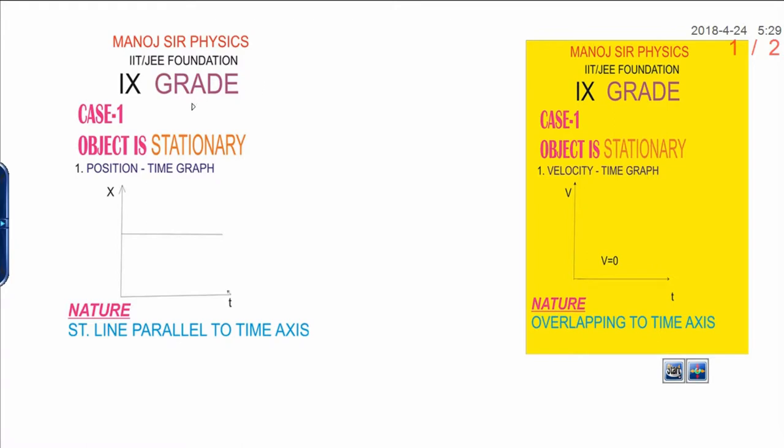First of all, I want to discuss case number 1. When object is stationary, how would you draw the position time graph? When object is stationary, it means its position, let position is x. Position is fixed, let it is 2 meter.